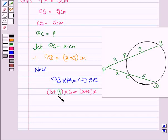Now, 9 plus 3 is 12. So it is 12 into 3 is equal to x into x is x squared plus x into 5 is 5x.